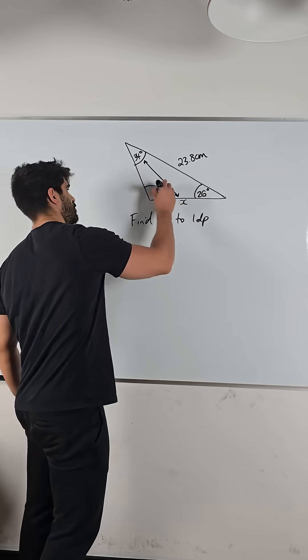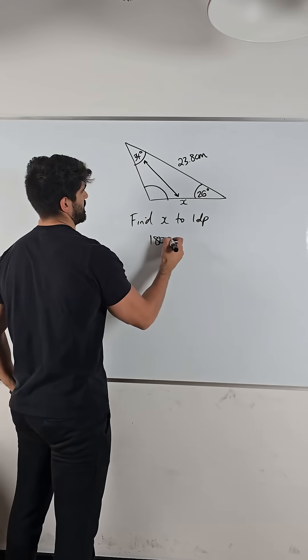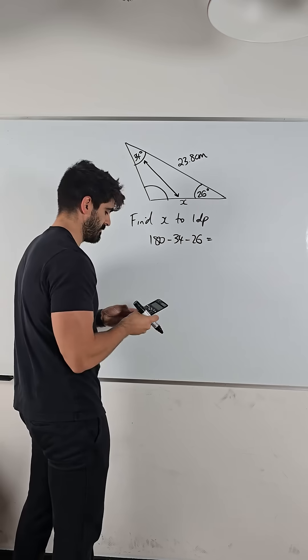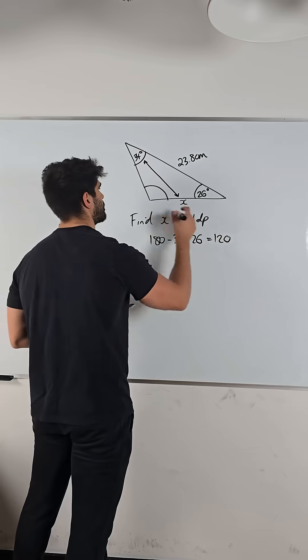Well, actually, we can work out this angle super easy by doing angles in a triangle add up to 180. So we're going to do 180 minus 34 minus 26, which I ain't doing now in my head. 120. Looks about right.